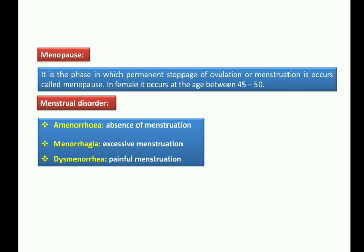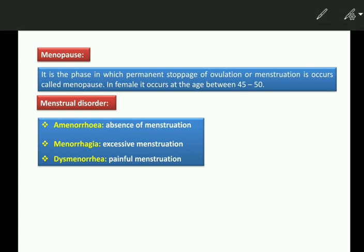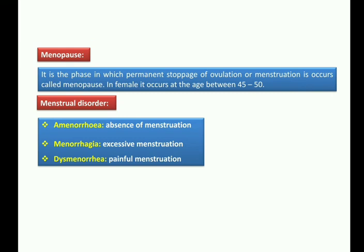At a certain age, the menstruation cycle permanently stops. This process is called menopause. The definition of menopause is: it is the phase in which permanent stoppage of ovulation or menstruation occurs. In females, menopause occurs between the ages of 45 to 50.